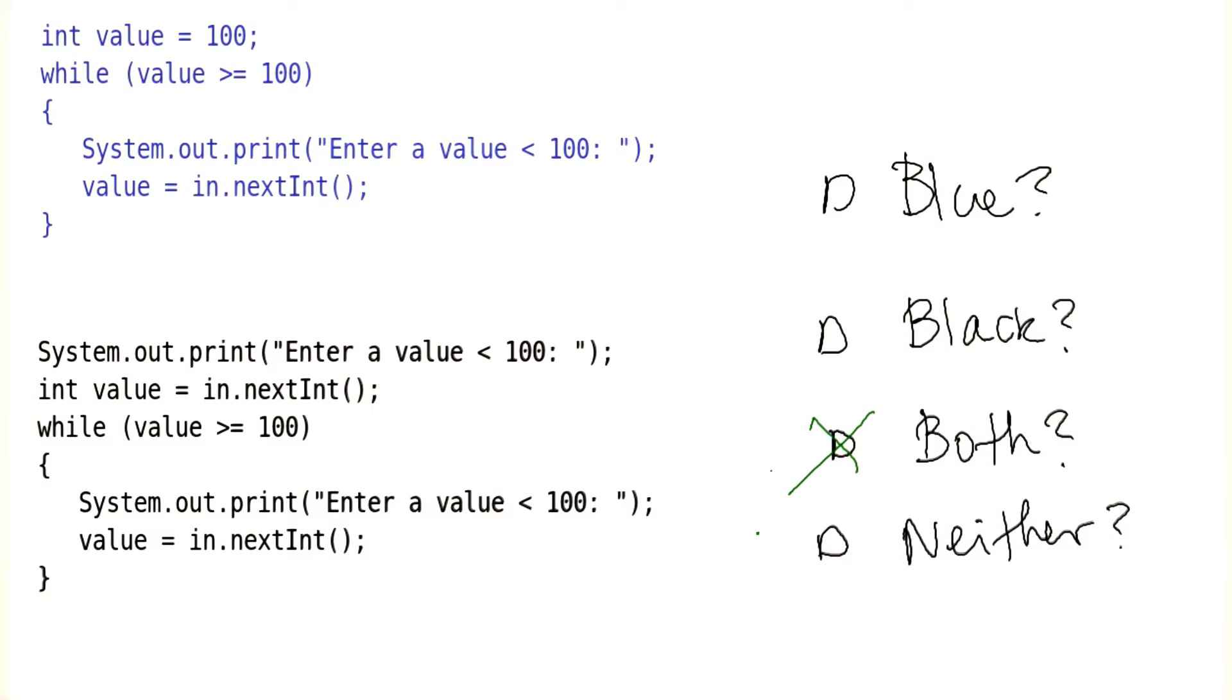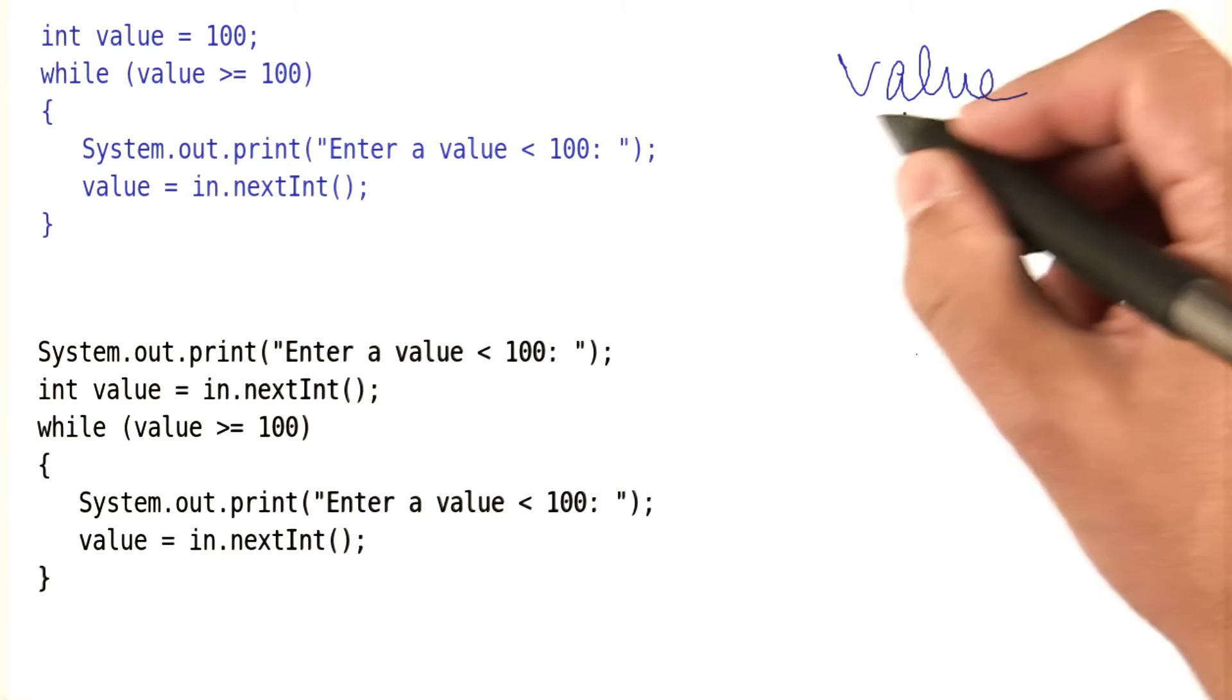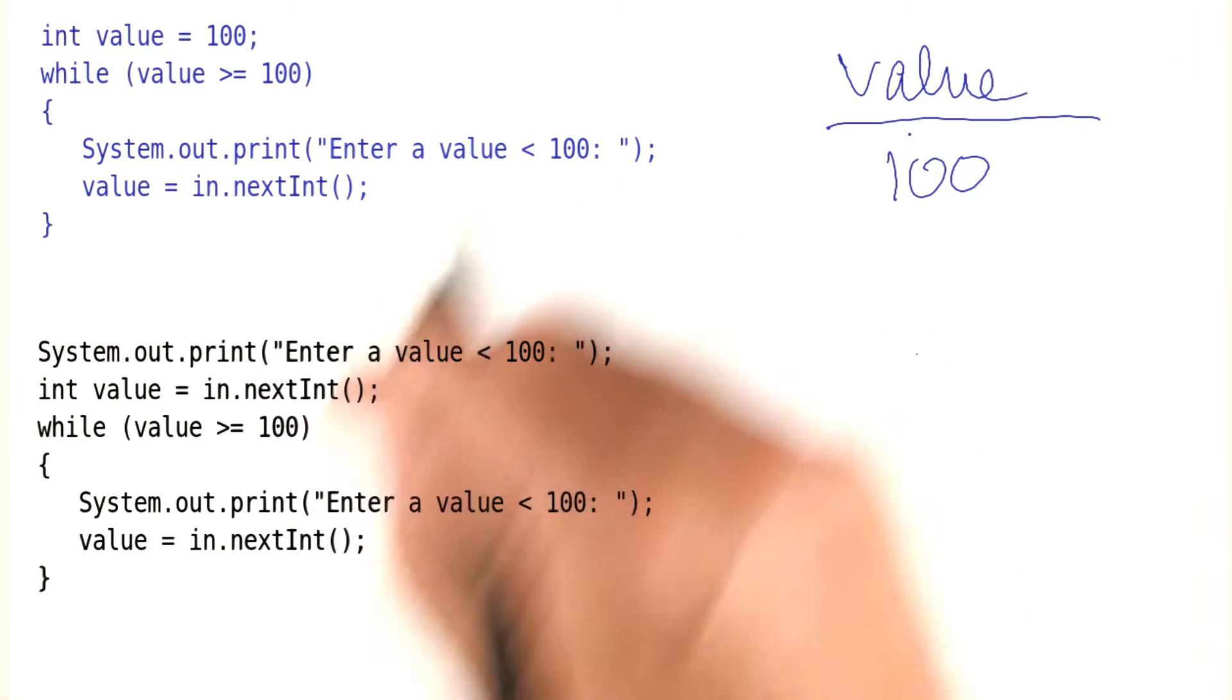Well, they're actually both right. Let's see why. Let's look at the blue code first. When we start, value is 100.